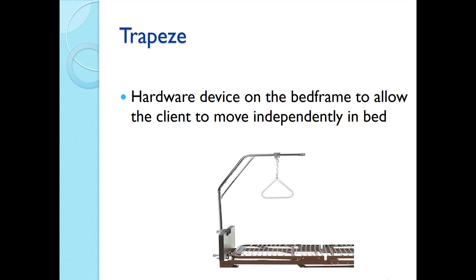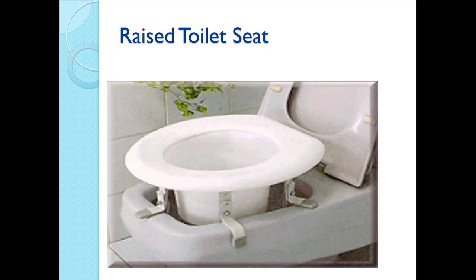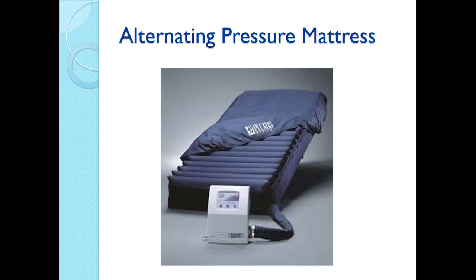A trapeze is a hardware device on the bed frame that allows the patient to pull themselves up using their upper extremities, helping them be more mobile in the bed when their lower extremities are restricted. A raised toilet seat is used particularly for post-operative hip replacement patients, as they need a higher seating position to safely bend at the hip without risking dislocation. An alternating pressure mattress is a specialty mattress used to help prevent pressure ulcers from forming or to treat existing ones.